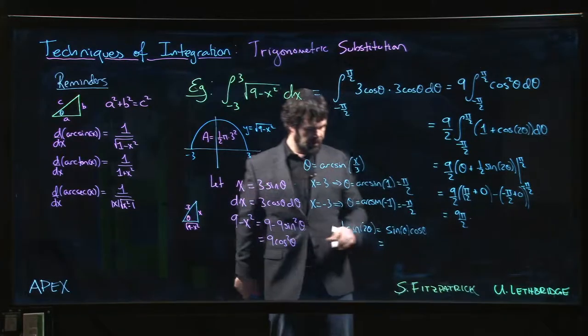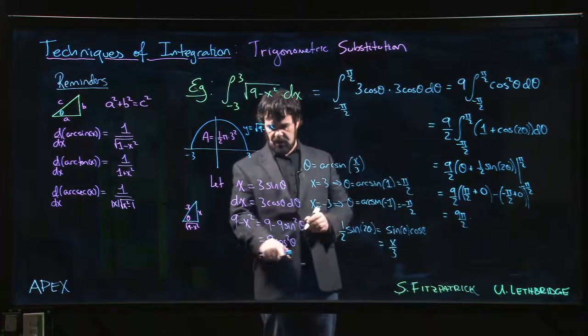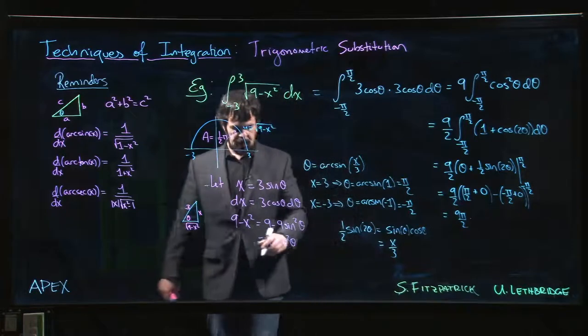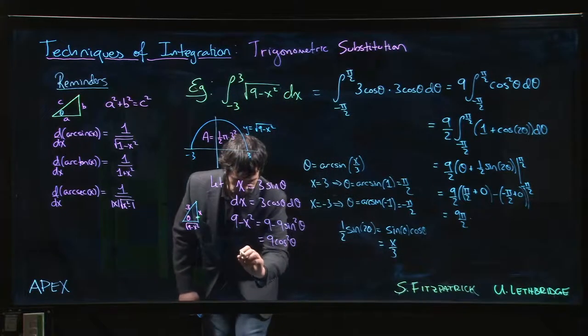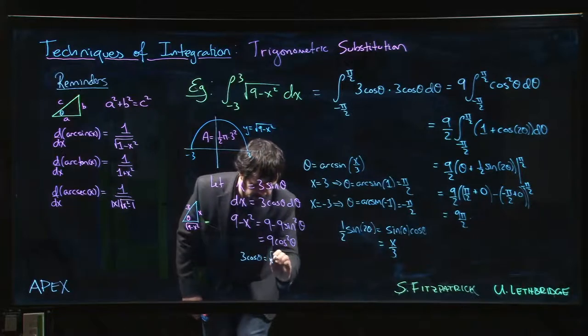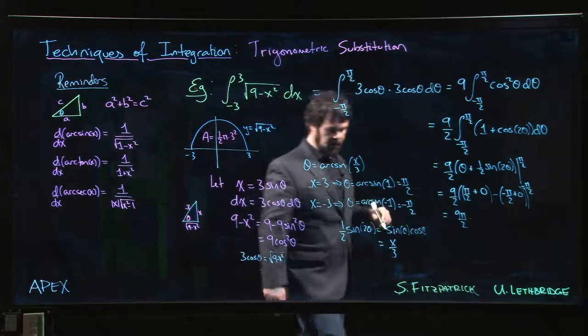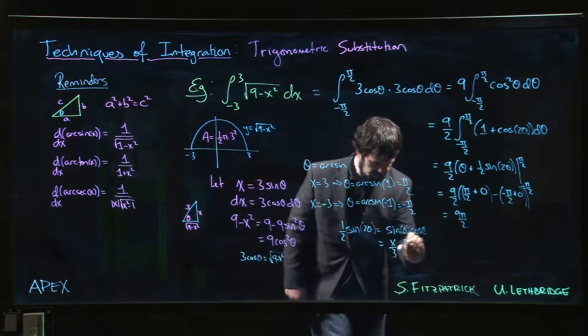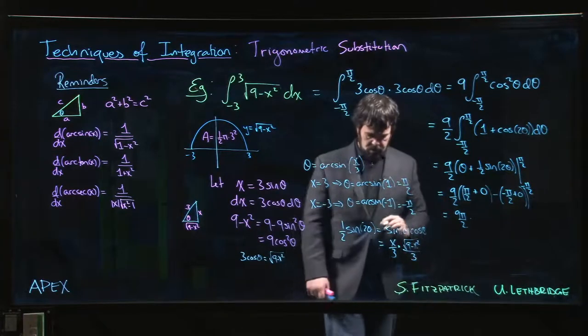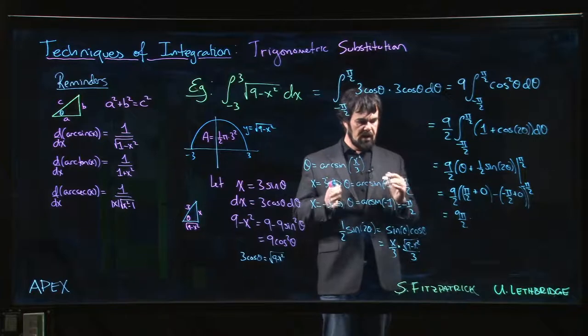sine theta is x over 3. Cos theta, well, we can kind of solve it from here. So we know that 3 cos theta is the square root of 9 minus x squared, or get it from the triangle if you want. So cos theta is that square root 9 minus x squared over 3.